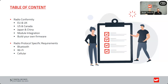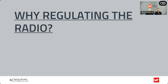Our agenda covers radio conformity in the EU and UK, also US, Canada, Japan, and China. We will speak about module integration, building your own firmware, and radio protocol-specific requirements: Bluetooth, Wi-Fi, and cellular. A key question is: why are we regulating radio? Regulation is needed because radio spectrum is a limited resource, and its use is strongly growing — everything is going wireless — so it must be regulated.